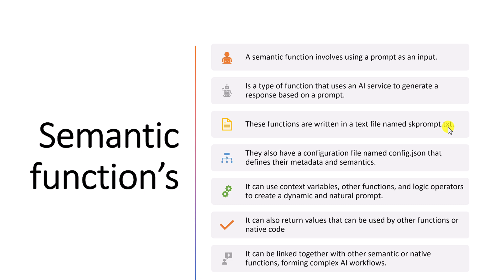If you use any other text file name it won't be recognized, so you have to define the skprompt.txt file. You can also configure parameters based on the prompt. That configuration you have to define in a separate JSON file called config.json. You can use variables, other functions, and logical operators to create dynamic and natural prompts. The input variable can be passed at runtime to generate dynamic prompts, and the return values can be used by other functions or native code.